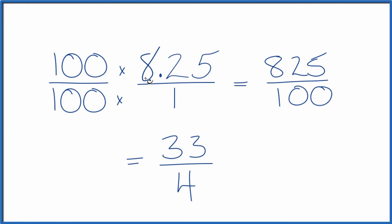So the decimal 8.25 equals the fraction 33 fourths. This is an improper fraction. The numerator is larger than the denominator. So we could change it to a mixed number.